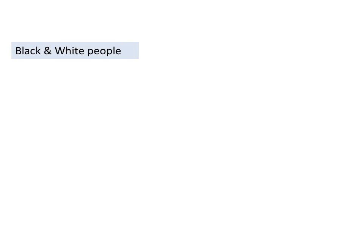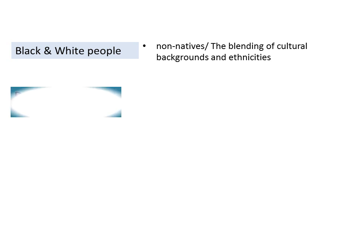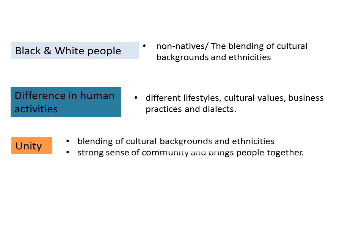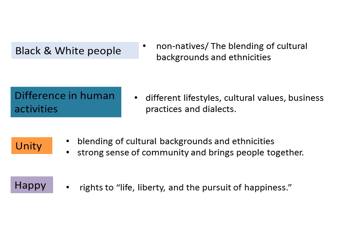Unlike other countries, the USA has both black and white, and native and non-native people. If we go to China, Korea, or other European countries, we don't see such an ethnic blend. They also have different human activities, different lifestyles, cultural values, and dialects, yet there is unity and a sense of community, and they are happy. Unlike in India, the diversity of culture in the United States of America is mainly due to immigration. However, both countries experience diversity in their multicultural societies.